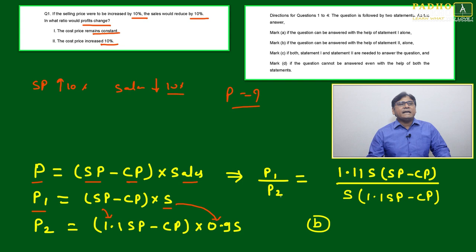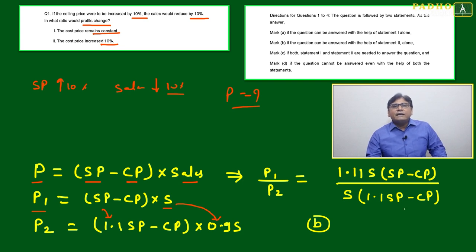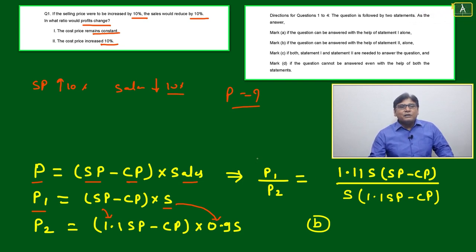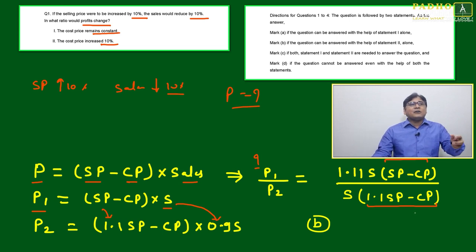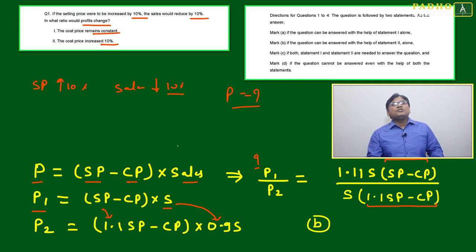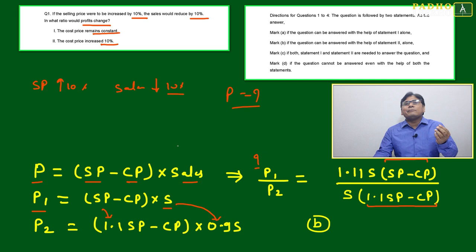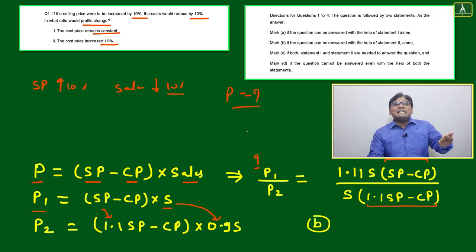We take the ratio P1/P2 to check if it's determinable. In the numerator and denominator both have variables SP and CP which we cannot cancel. With Statement 1 (cost price constant), we still cannot calculate (1.1 SP - CP) / (SP - CP) because we don't know the exact values of SP or CP — only the percentage change is given, which is not sufficient.